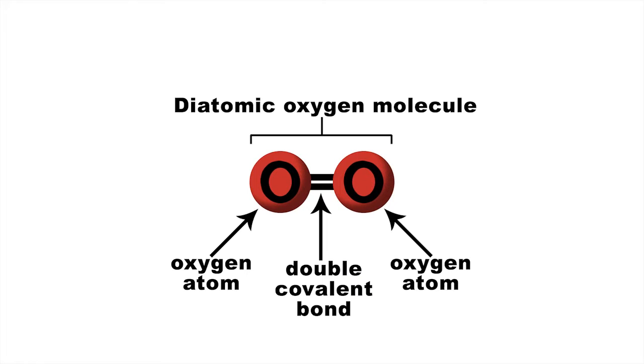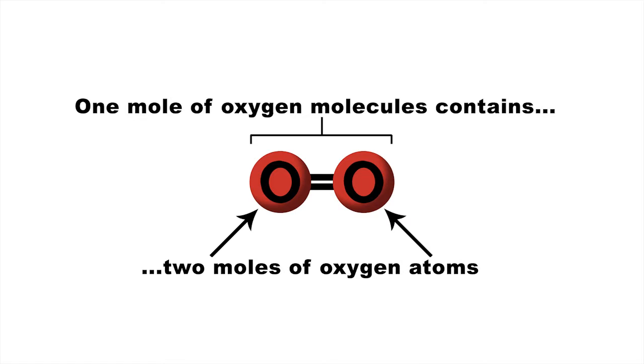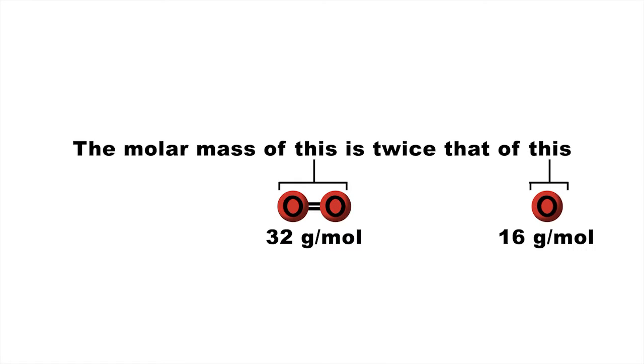Likewise, in nature, elemental oxygen typically exists as diatomic O2 molecules. So a mole of the oxygen we breathe contains two moles of oxygen atoms, and has a molar mass of 32 grams per mole, or double the molar mass of atomic oxygen.